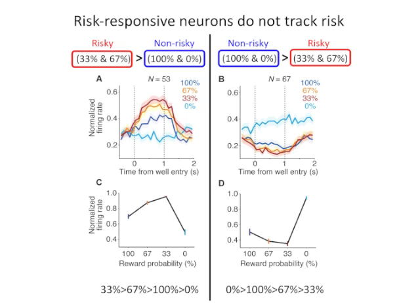What might these neurons be representing? One possibility is that these neurons are tracking the heightened salience associated with both certain and uncertain reward, as proposed by Esbel and Hazel-Grove. Indeed, the population response for certain reward is higher than the response for certain non-reward, and the response for uncertain reward is higher still.